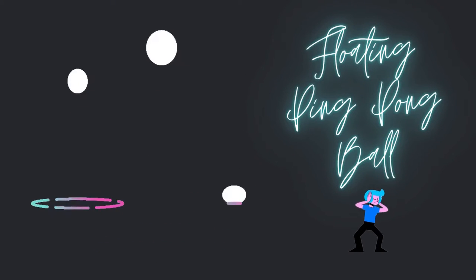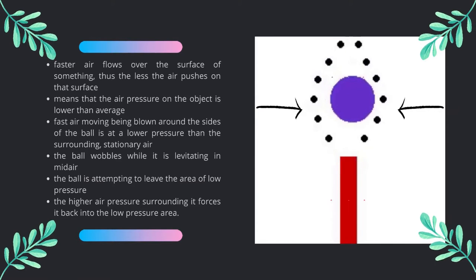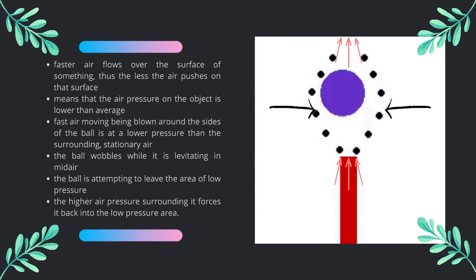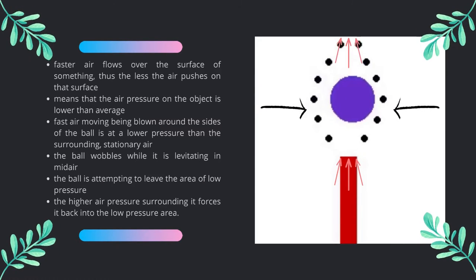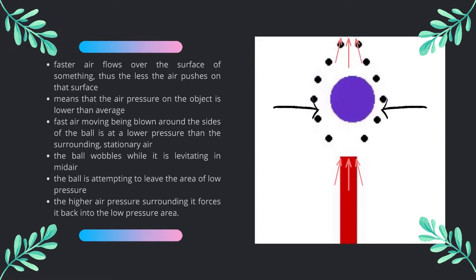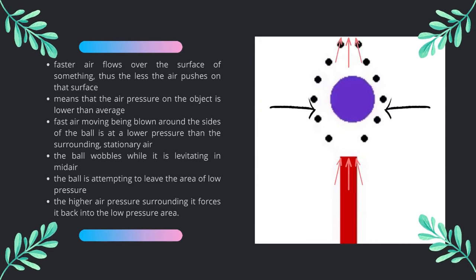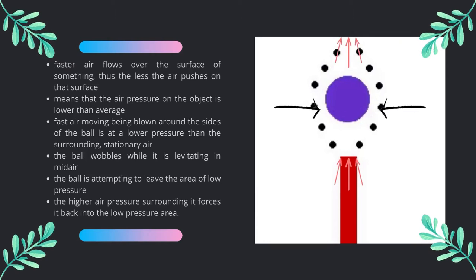Now let's move on to our final experiment covering the application of Bernoulli's principle in daily life: the floating ping pong ball experiment. The theory relates to Bernoulli's discovery that in moving air, when faster air flows over the surface of something, the less the air pushes on that surface. This means that the air pressure on the object is lower than average.